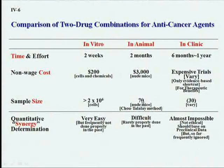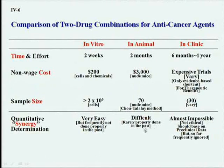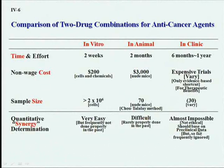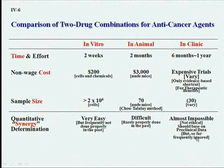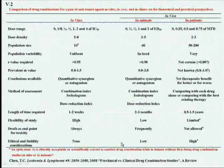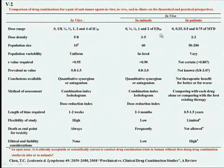I question the FDA: if they don't have a definition or did not do preclinical expression, how do they allow drug combinations to be done in humans? That is very bad practice — that is a very strong criticism in my review article. Here is a more detailed comparison of in vitro, in animal, and in patients.